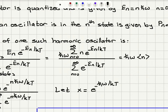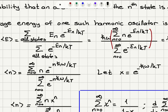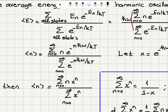The average energy becomes ℏω times the average value of ⟨n⟩. The average value of ⟨n⟩ is the sum from n=0 to infinity of n times the probability e^(−nℏω/kT), divided by the partition function. Defining x = e^(−ℏω/kT), the average value of ⟨n⟩ becomes the sum from n=0 to infinity of n·xⁿ, divided by the sum from n=0 to infinity of xⁿ.